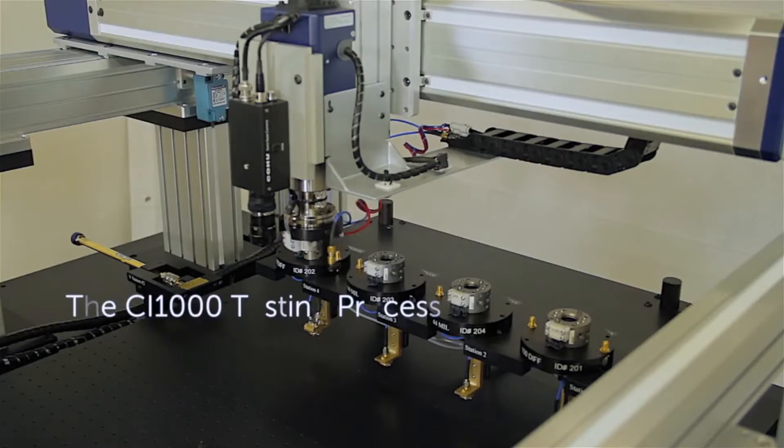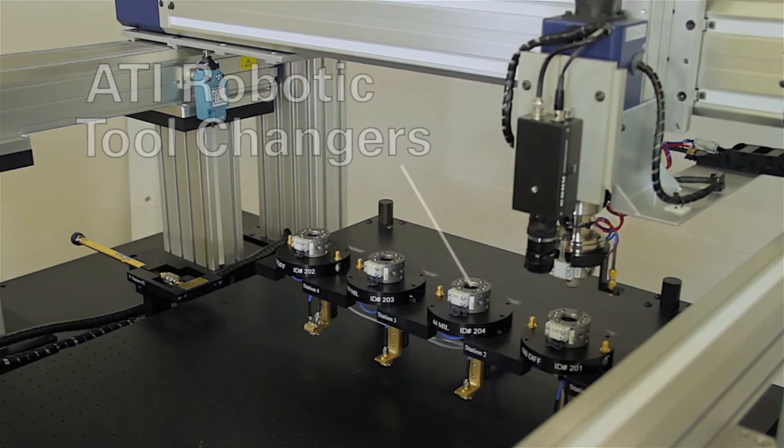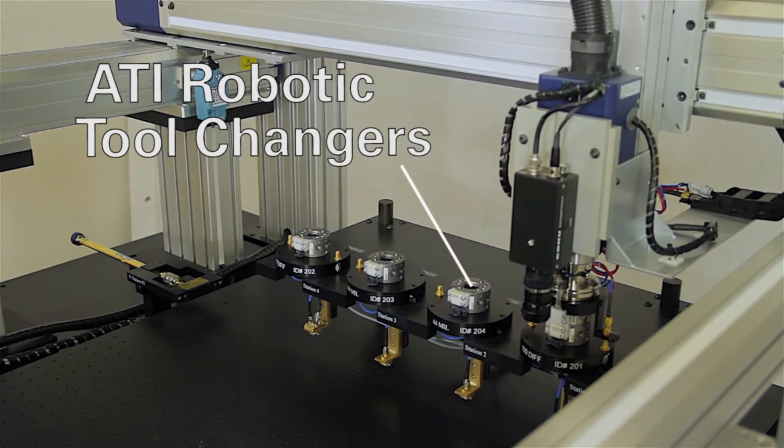To begin operation, the CI-1000 probe rack is initialized. The probe rack holds the Introbotics patented probe tips.